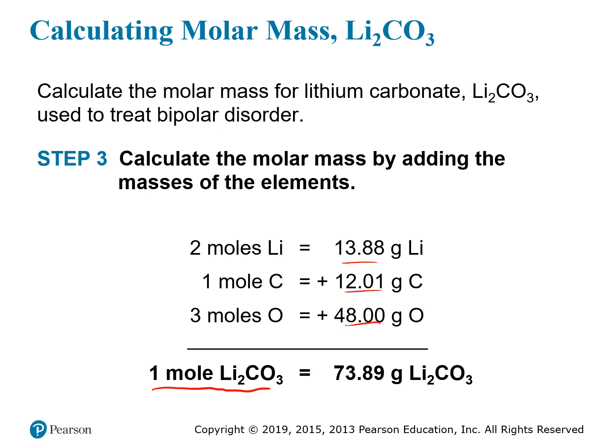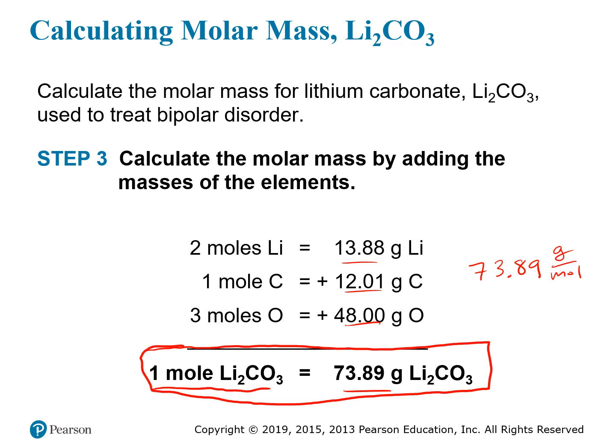Adding the individual masses gives a total molar mass of 73.89 grams for lithium carbonate. Sometimes molar mass is expressed with units of grams per mole, which is actually a useful way to view it — as a relationship between a mole and how much it weighs. In this case, one mole equals 73.89 grams, and we can use this relationship to create two different conversion factors to convert back and forth between moles and grams of lithium carbonate.